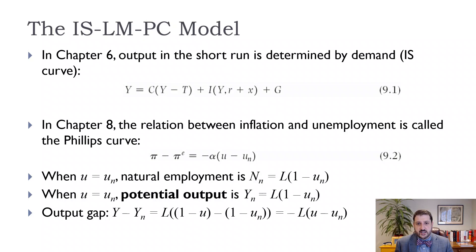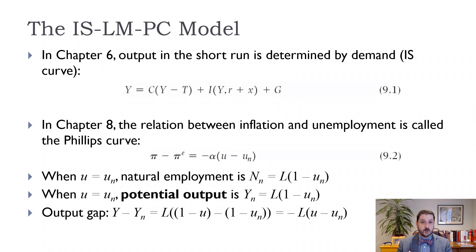In Chapter 6, we had our augmented IS model, where output is equal to consumption — which is a function of disposable income — plus investment, which is a function of output and the real borrowing rate R plus X, where R is the real policy rate, plus government spending G.